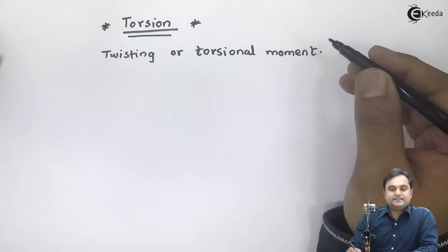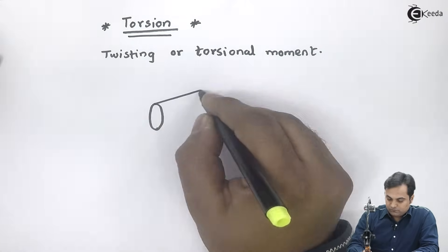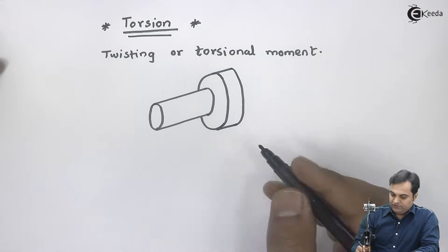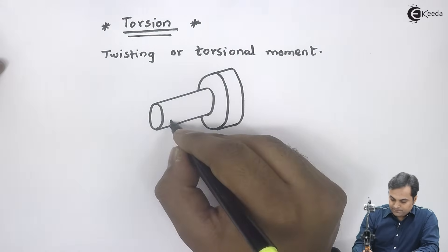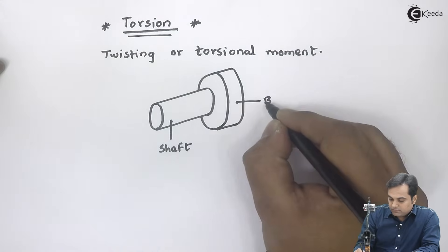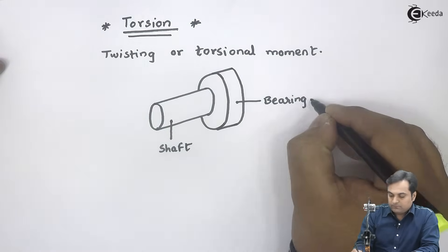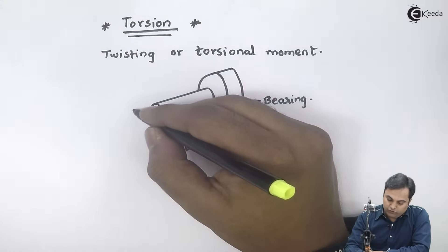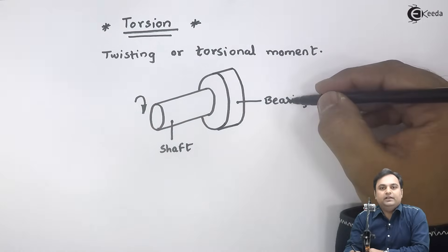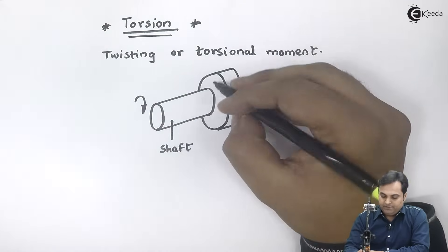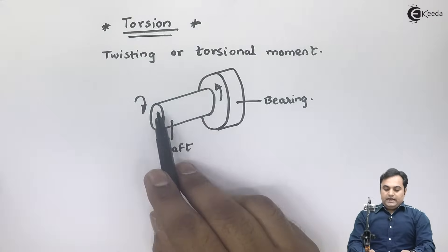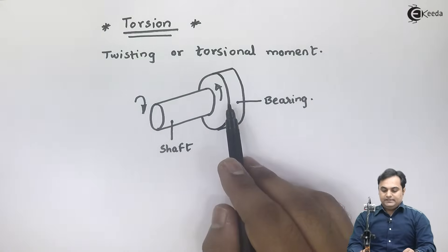This can be explained with a diagram. Here we have a diagram in which there is a shaft and bearing. The shaft is that member which rotates. So if we are rotating the shaft and it is supported inside a bearing, if a shaft rotates in clockwise direction, bearing will try to oppose its motion in the opposite direction. So at the shaft we have clockwise rotation, at the bearing end we have anti-clockwise rotation.